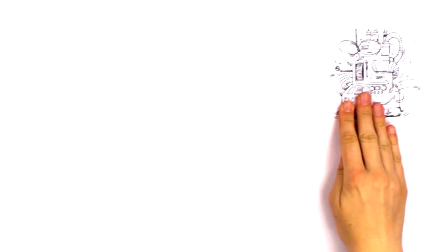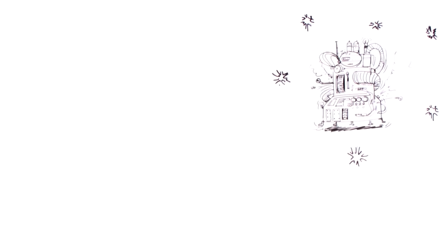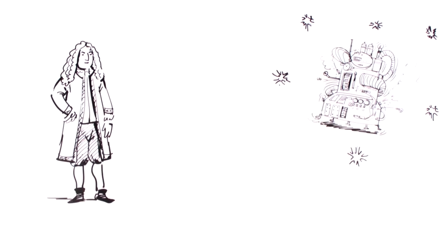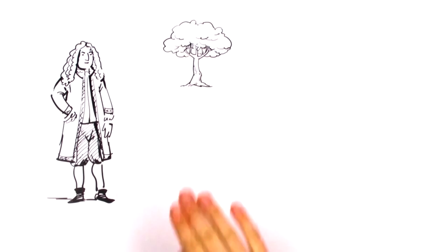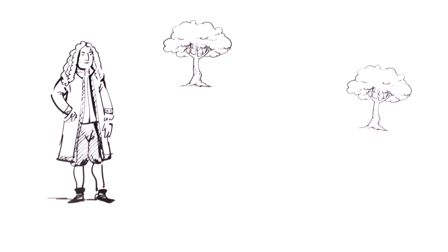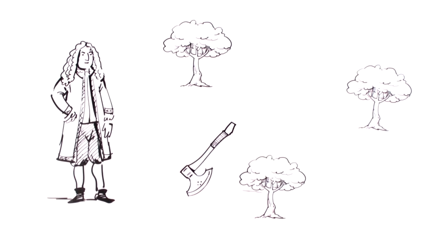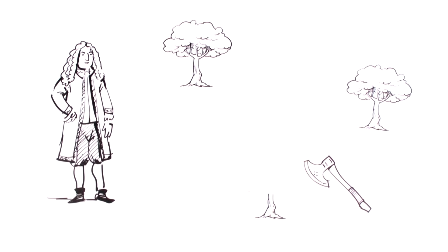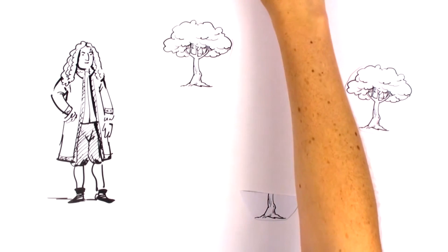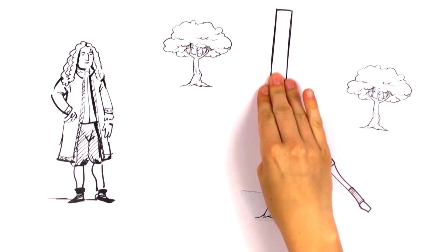Let's go back to the beginning. Even in the 18th century, people were interested in the environment. For example, Karl von Karlowitz realized that you shouldn't cut down more trees than will grow again to replace them. So he had recognized the basic principle of sustainability.